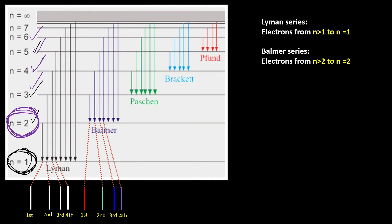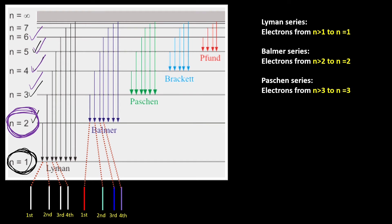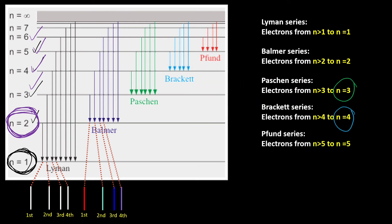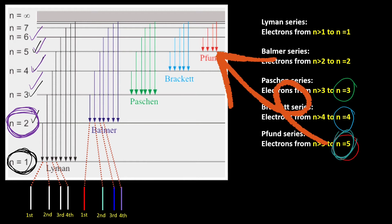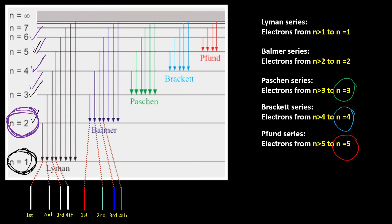But for the Lyman series, because it occurs in the ultraviolet light region, we can't see the lines with our naked eyes. The same principles apply for Paschen, Brackett, and Pfund series. For Paschen series, electrons from higher energy levels will fall to n equals to 3. For Brackett series, electrons from higher energy levels will fall to n equals to 4. And for the Pfund series, electrons from higher energy levels will fall to n equals to 5, to produce the discrete lines in each of the series.